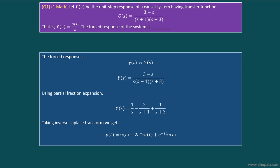1/s will have u(t), and 1/(s+1) will have e^(-t)u(t), and 1/(s+3) will have e^(-3t)u(t). We have this kind of signal because it is given that the system is causal.